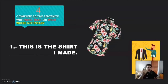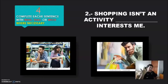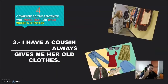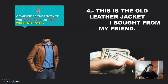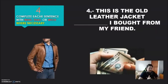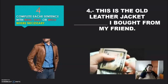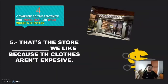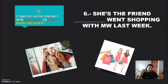Number one: 'This is the shirt ___ I made.' Number two: 'Shopping is an activity ___ interests me.' Number three: 'I have a cousin ___ always gives me her old clothes.' Number four: 'This is the old leather jacket ___ I bought for my friend.' Number five: 'That is the store ___ we like because the clothes aren't expensive.' Number six: 'She's the friend ___ went shopping with me last week.'